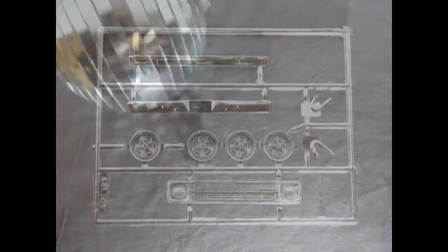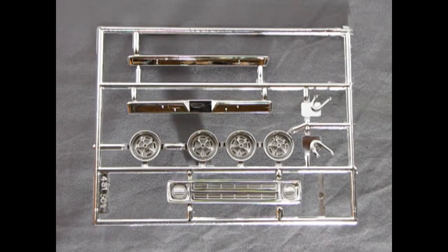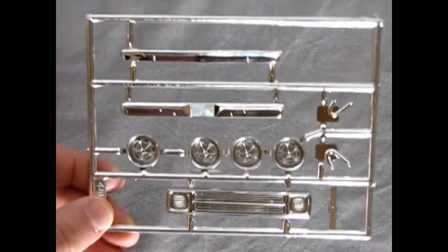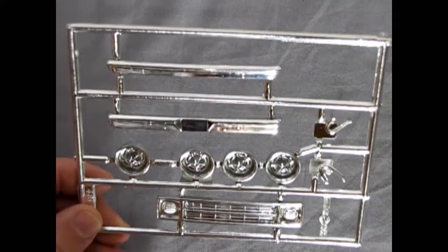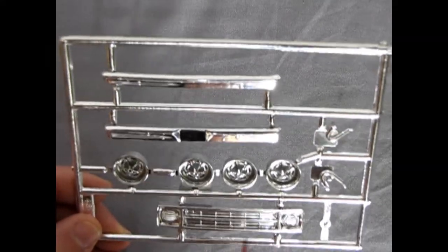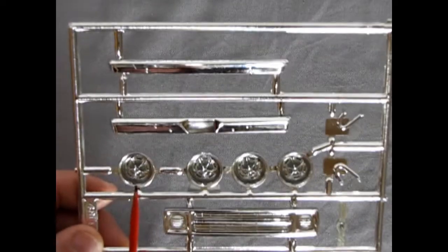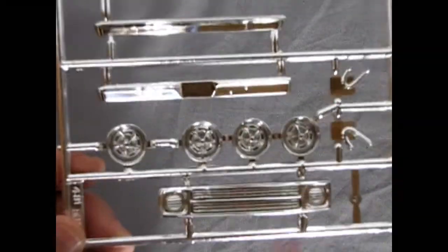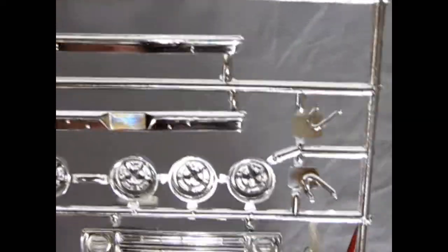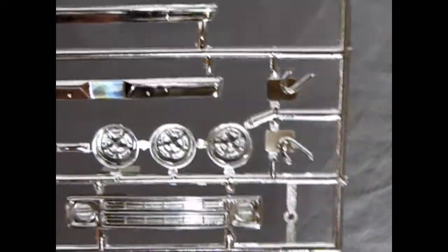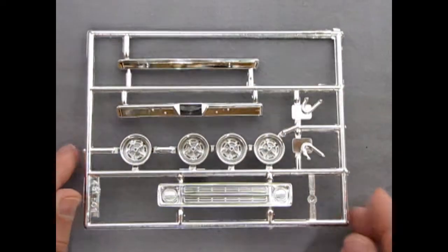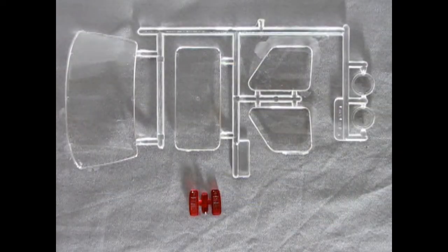Right on, right on. And here we have the sparkling bits, which again are not very much for 1977. Chrome was becoming sort of passe at this time. But here we have the nice grille with the single big headlights in it. A little bit of a black wash will pick that up. There's our custom wheels, again sort of like those Magnum 500s. And then here we have our two bumpers and our side mirrors. So again, not too much for chrome, but chrome where it counts.